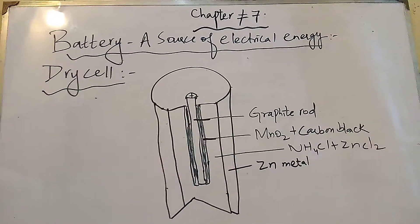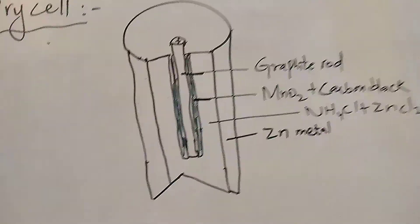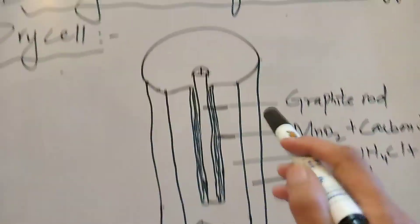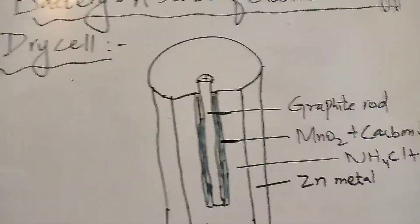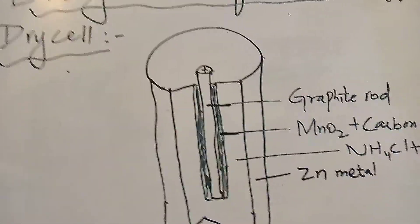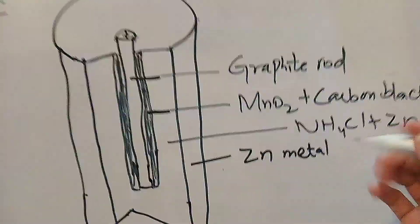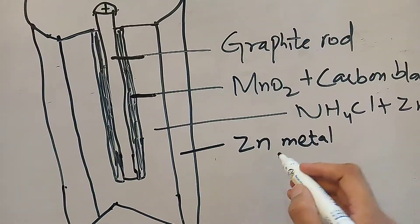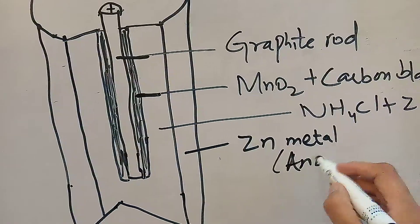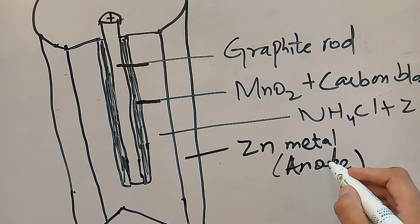If we see the construction of dry cells, it is made up of zinc container. It is made up of zinc container and zinc metal. It will act as an anode. So the anode is made up of zinc.